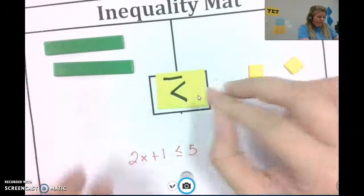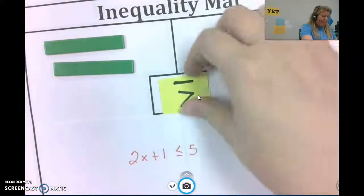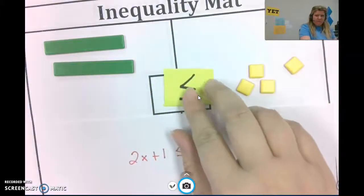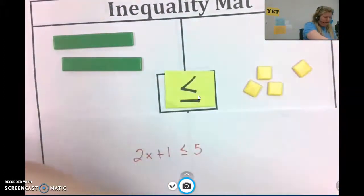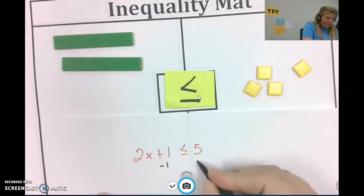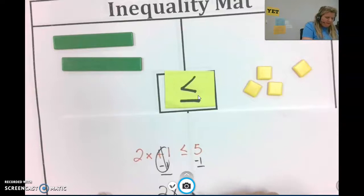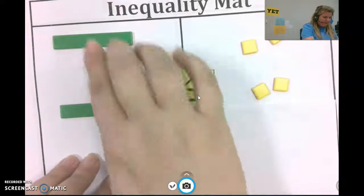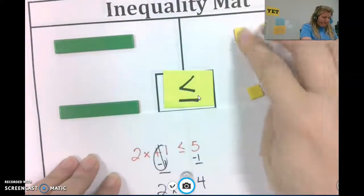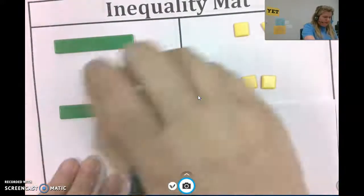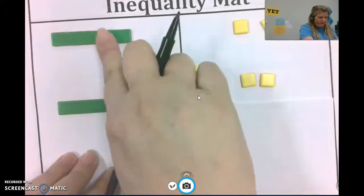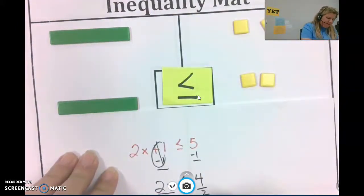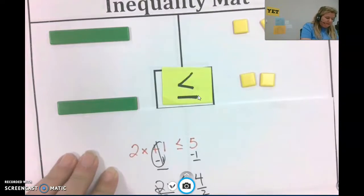I forgot to put my symbol in there. Okay, so I took away 1 from each side. So that left me with 2x less than or equal to 4. Now, I would need to separate this into, or divide it into, 2 sections. So that each x, I can see clearly, 1x is 2. So I've divided it into 2 sections, leaving me with x is less than or equal to 2.